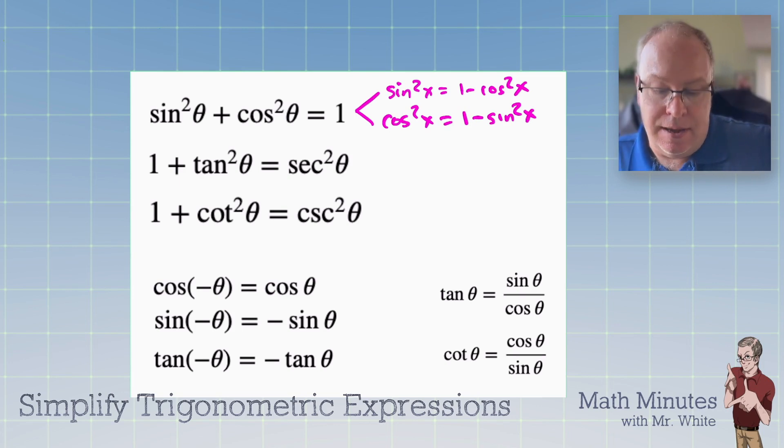These come up all the time. Where these 1 - cos²θ and the 1 - sin²θ, those come up all the time. So you want to watch for those and you can often swap in sin²θ or cos²θ. And you might even need to go the other way on some of these problems.